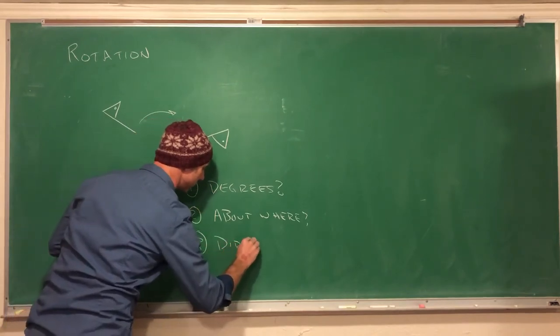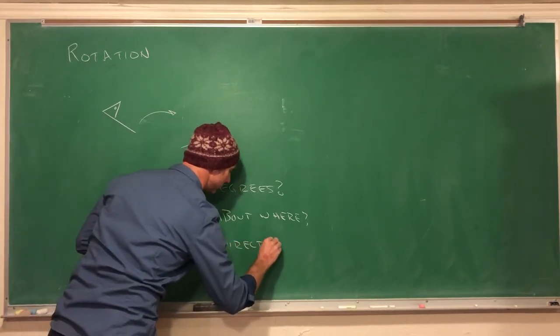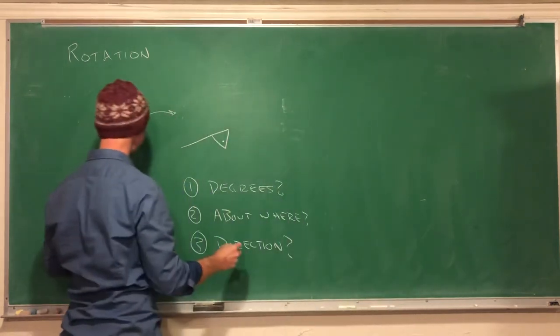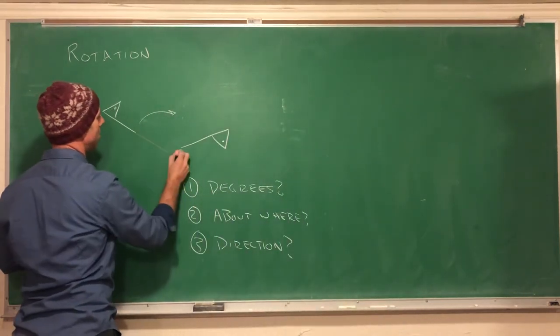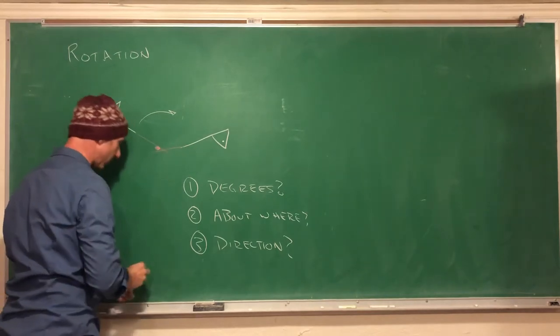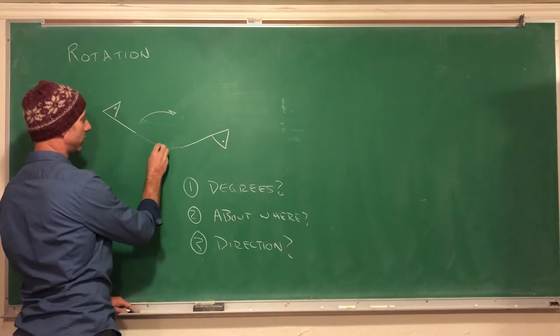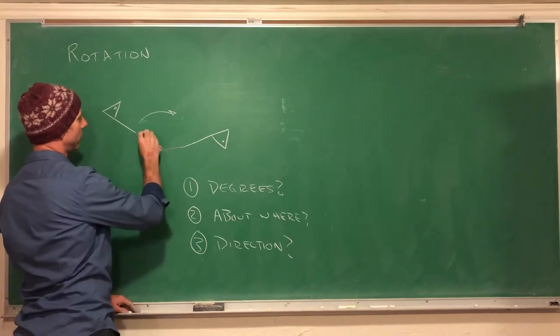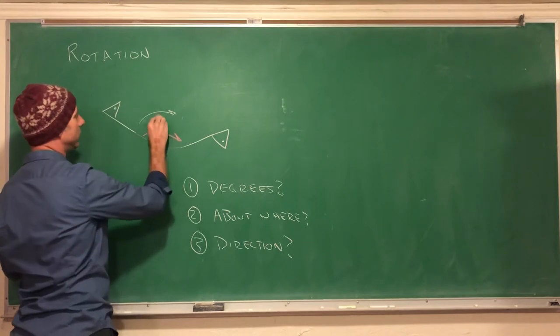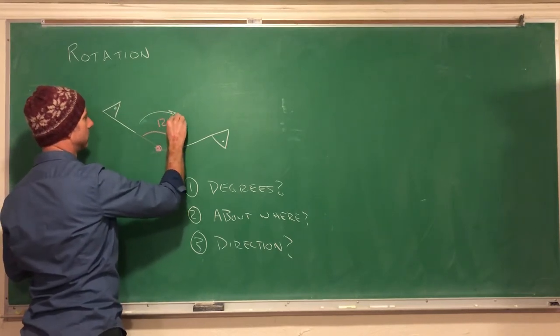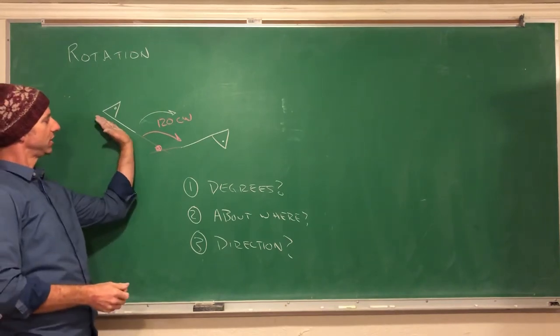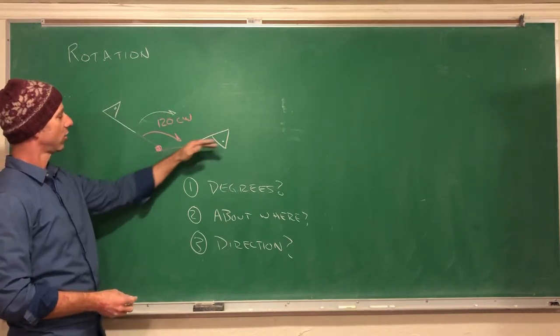And finally is going to be the direction. For example, if I take this one and continue these on, I'm going to say it rotated about this point right here. This angle was 120 degrees clockwise, so this golf tee went 120 degrees clockwise about that point.